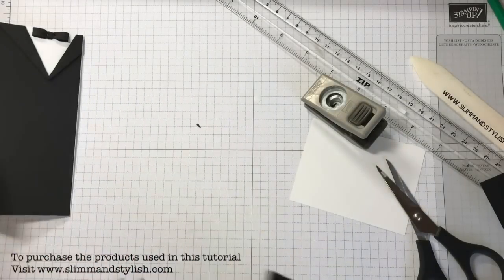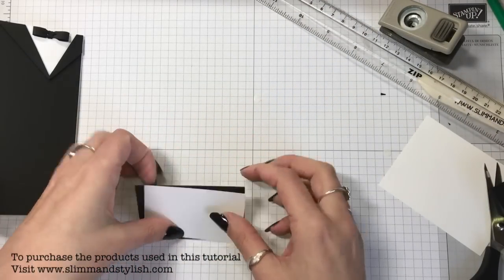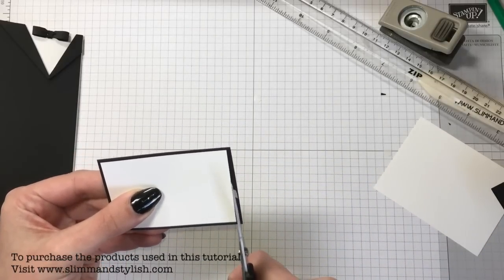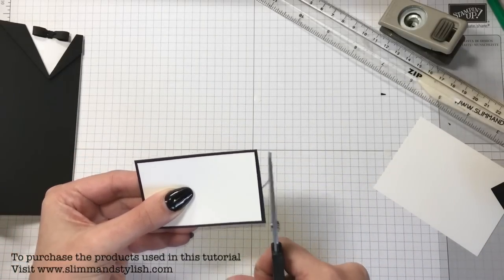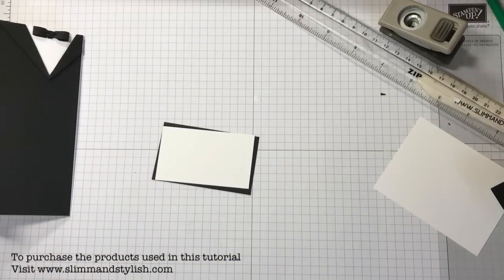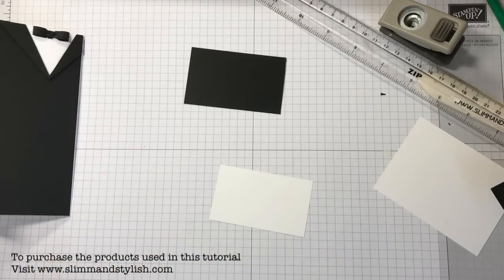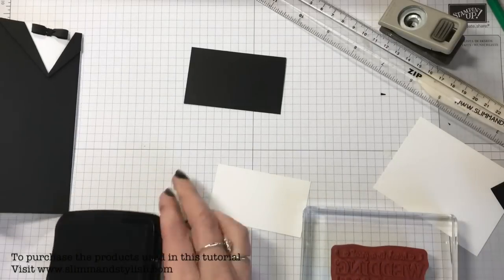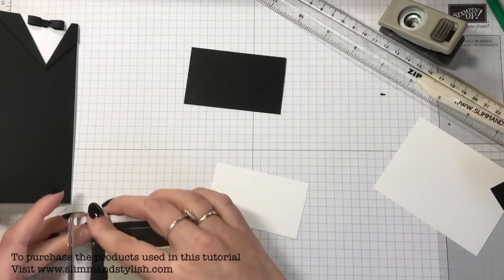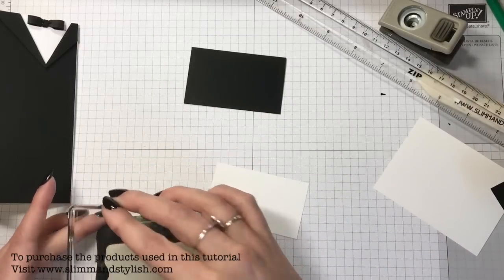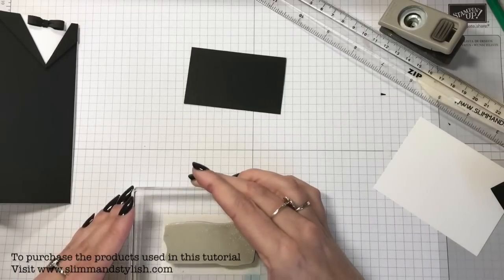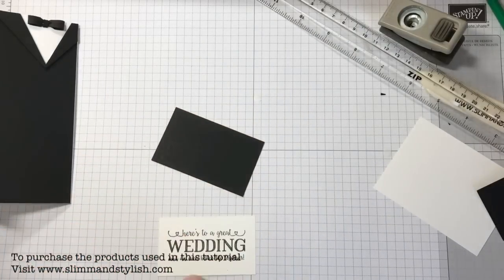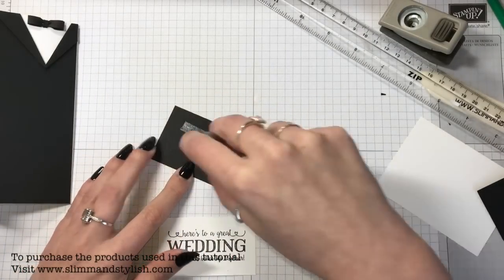Then I've just got these two bits of scrap. I think I was just rushing to get all of this already prepped for you because I knew it was going to be a long tutorial to do this. Here's to a great wedding and an even better life together. So I'm just going to use my Memento Black to ink that up, pop it on there. I'm going to use that to stick it down.